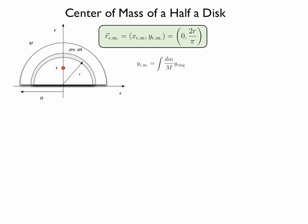And so the vertical position of the center of mass of that half a disk will be equal to the integral of dm over m times the vertical position of the center of mass of each of those rings, or integral of dm over m times 2r over pi.